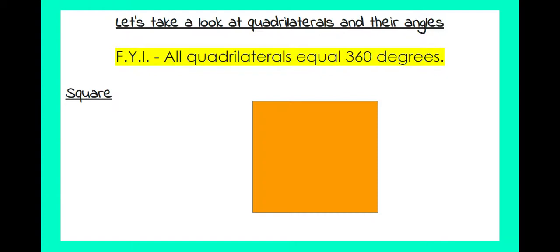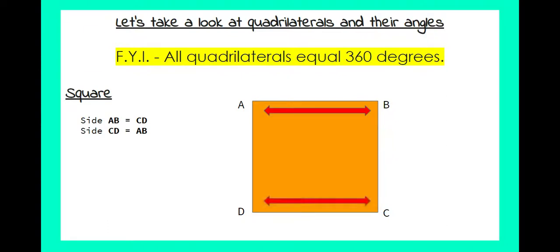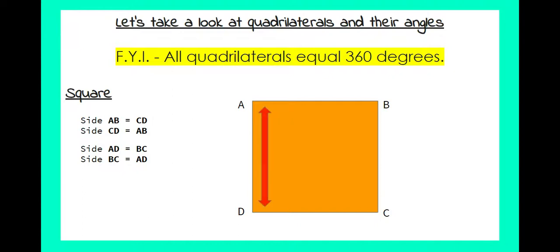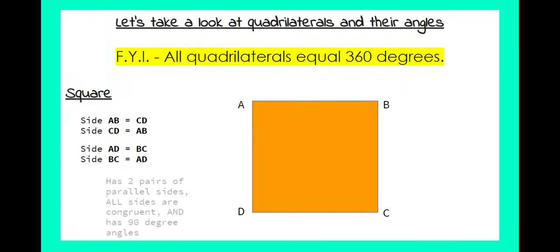And of course we come to the square, with angles A, B, C, and D. Side AB is equal and parallel to CD, and in reverse CD is equal and parallel to AB. Side AD is equal and parallel to BC, and in reverse BC is equal and parallel to AD. A square has two pairs of parallel sides, all sides are congruent or equal, and it has 90-degree angles.